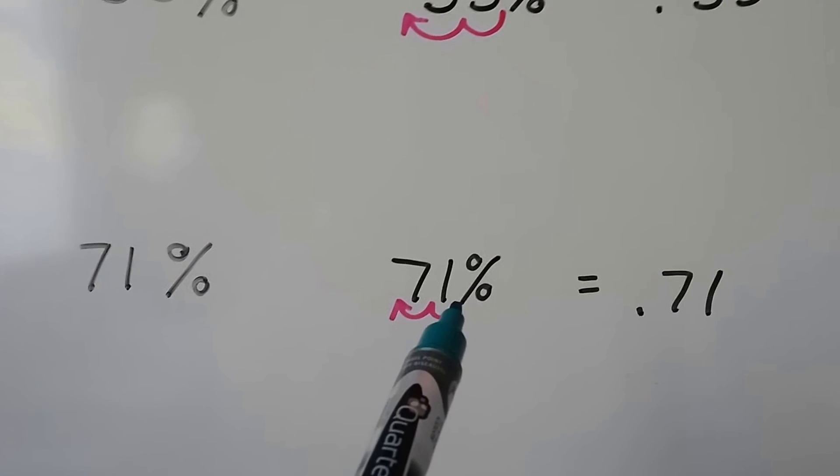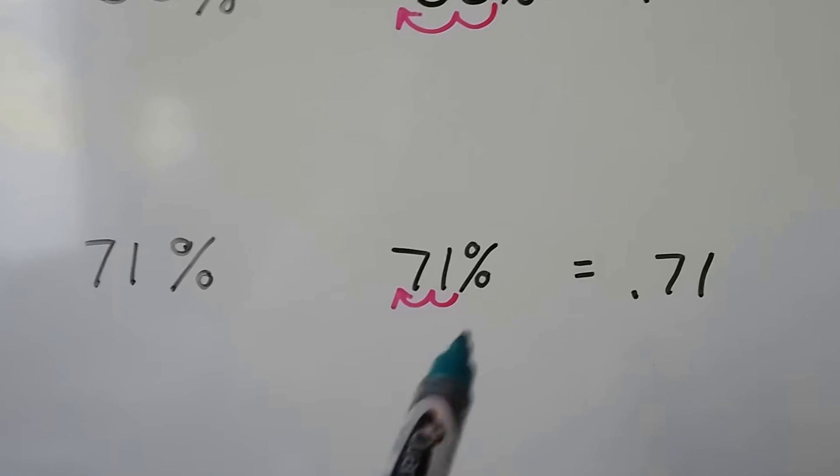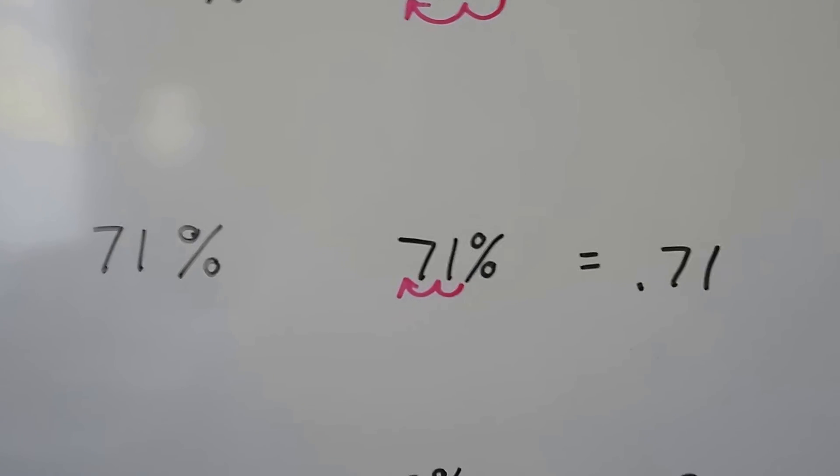71%. We start from here, do two hops. There's going to be a decimal in front of the seven. We get rid of the percentage sign. We have 0.71.